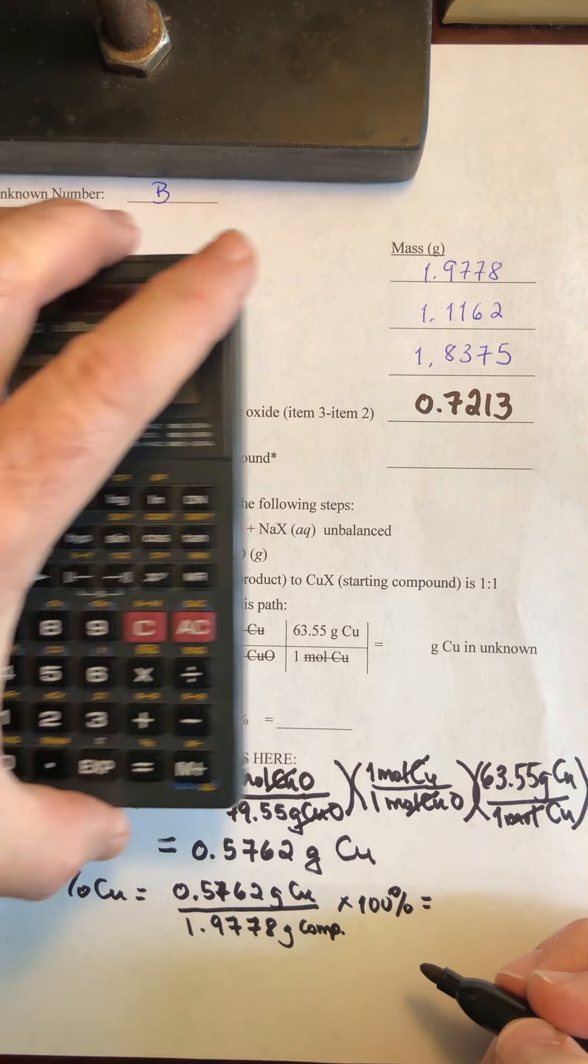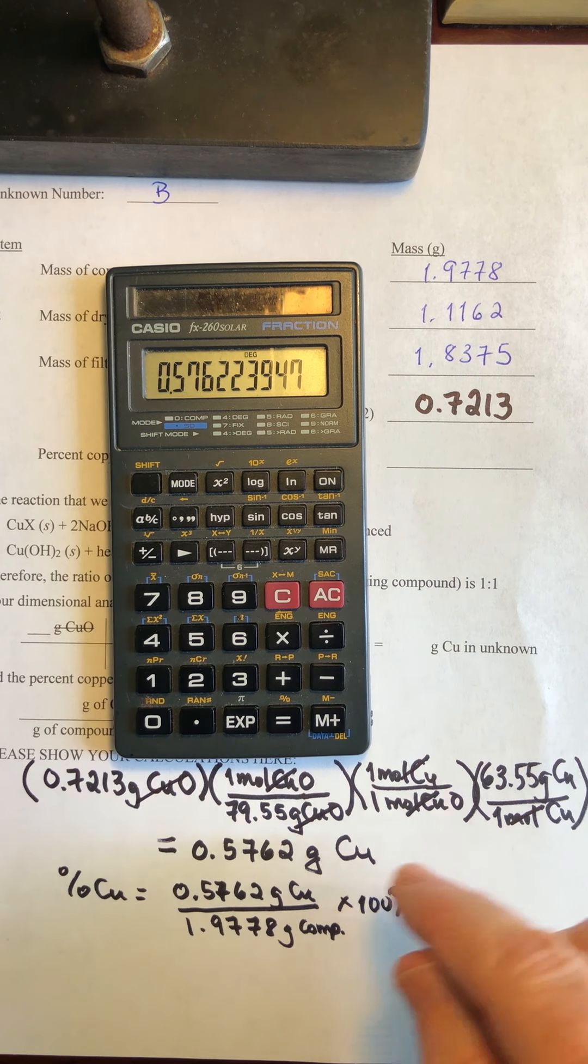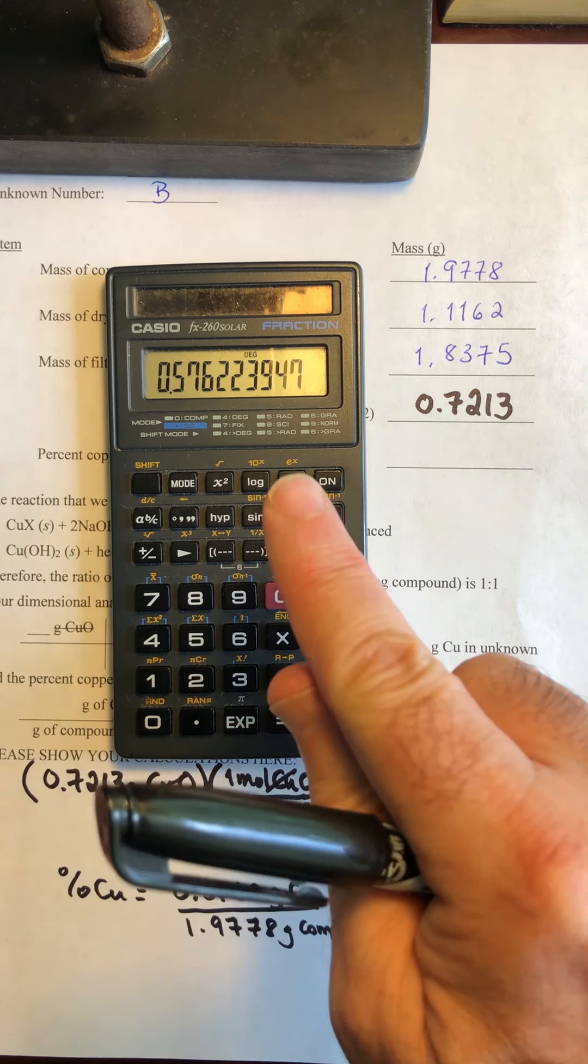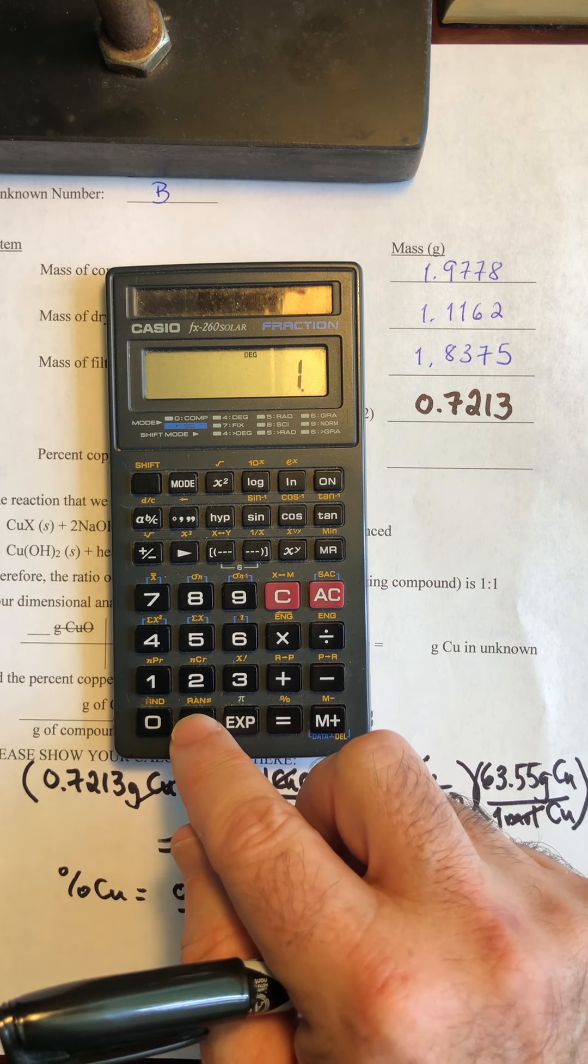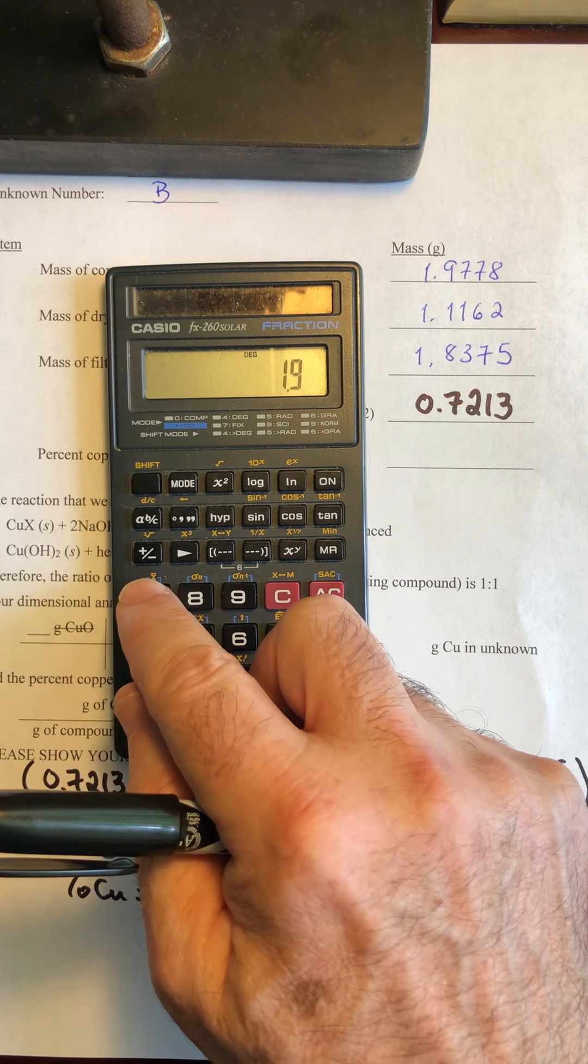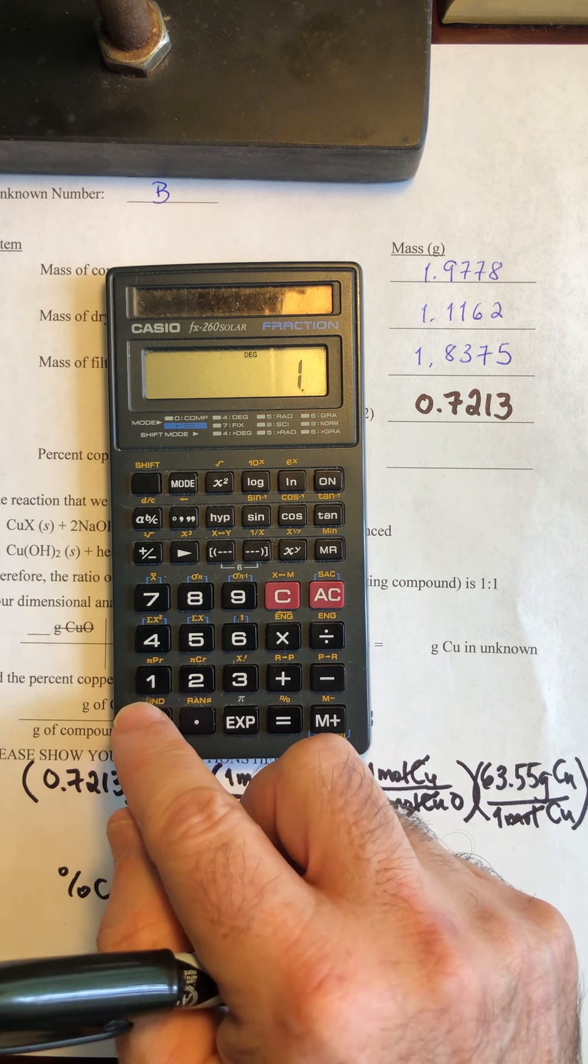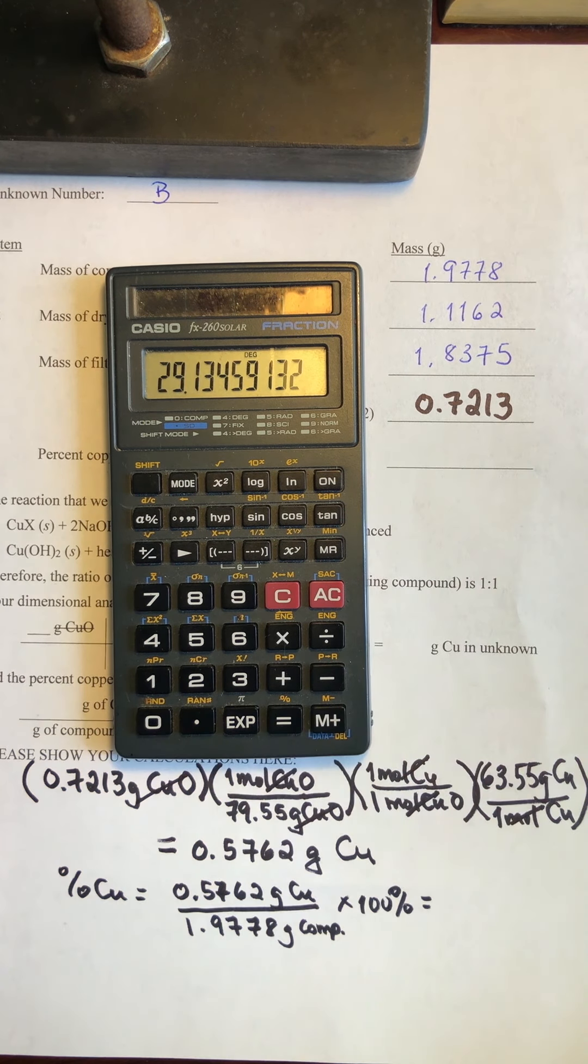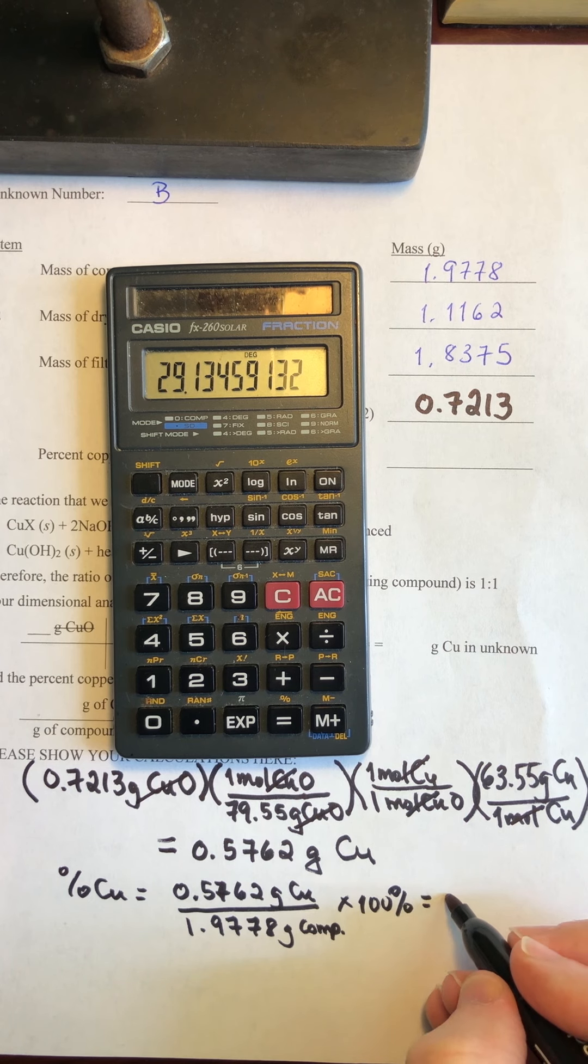So I left my number here in the calculator. Typically, we round at the end of it. So I left that in there, but I actually left it in my calculator. I'm going to divide by the total mass, 1.9778. And that's going to be multiplied times 100 to get the percent. And we get 29.13. We have four sig figs here, so we're going to leave it at that.